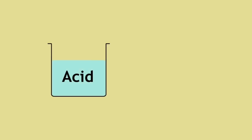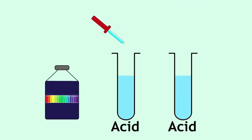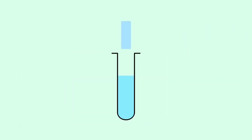You have learned that acids are substances with a pH lower than 7. We can test for acids using universal indicator solution or paper, which turns red or orange, depending on the strength of the acid. Blue litmus paper also turns red in the presence of an acid.